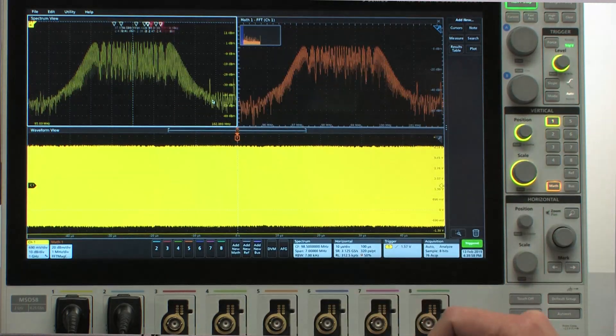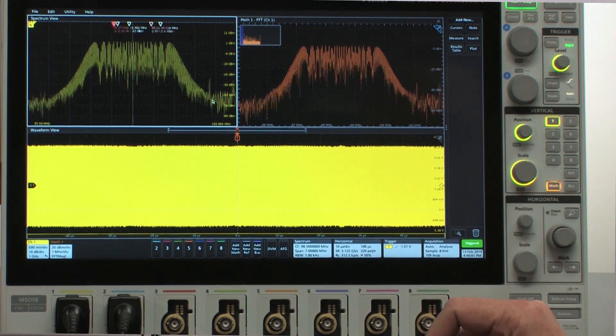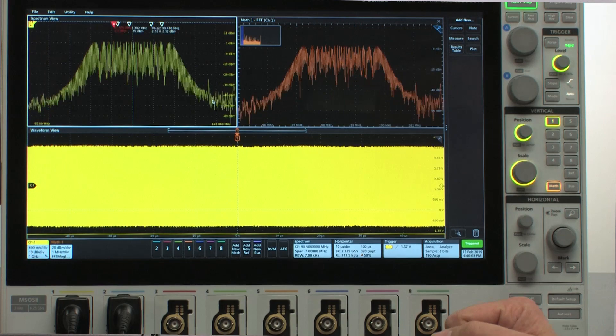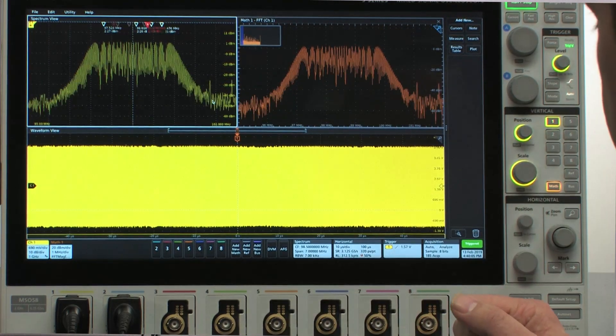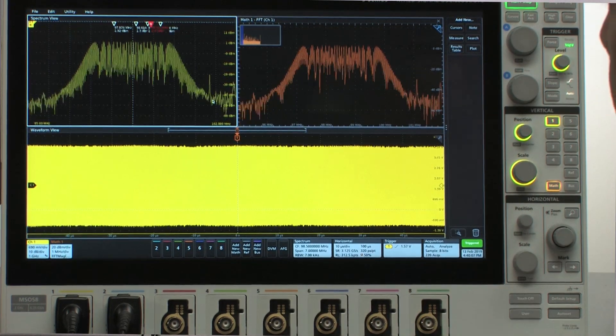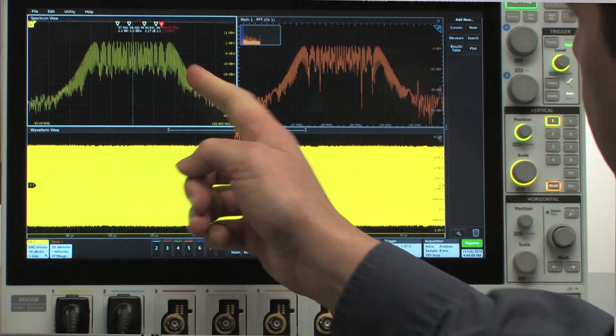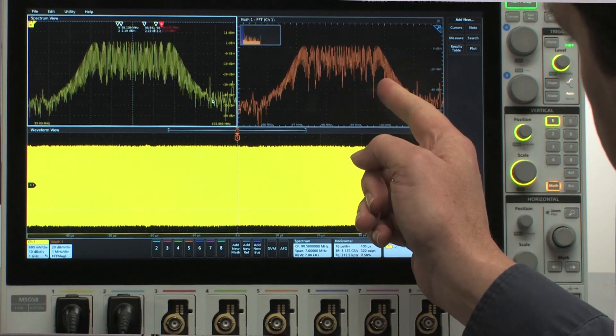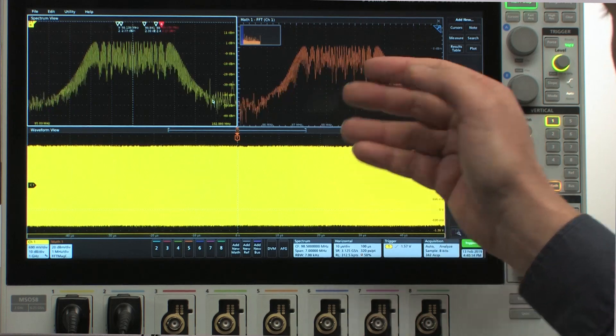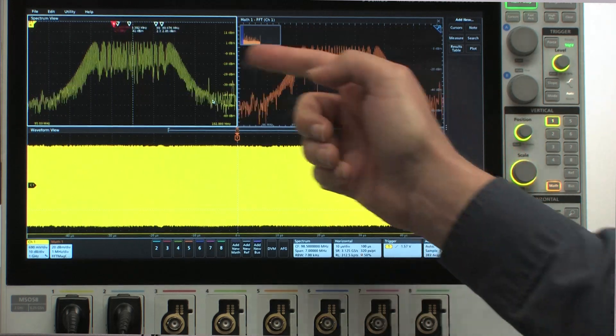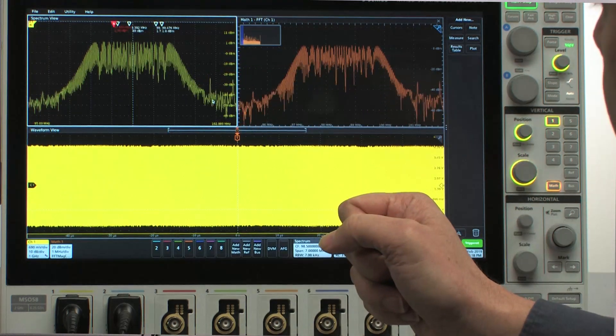Notice now that both views are showing my spread spectrum clock. So at first blush you may think, well what's the big deal about Spectrum View? So first major difference: this view was much easier to set up than this view. Remember, here I had to understand implications of my time domain settings; here all I had to enter was center frequency and span.